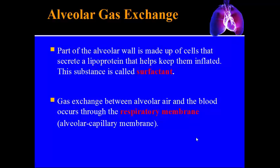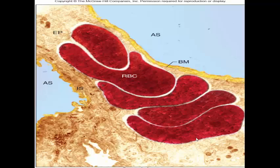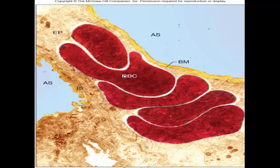The actual site of gas exchange between the air and the blood occurs at what's called the respiratory membrane — the membrane between the capillaries and the alveoli. In the image, the alveolar space is visible with red blood cells squeezing through, picking up oxygen from the air sacs to deliver to other tissues in the body.